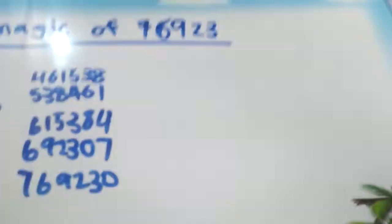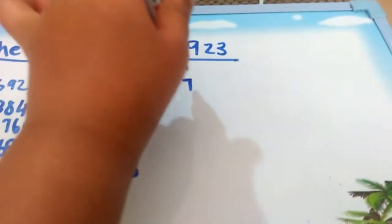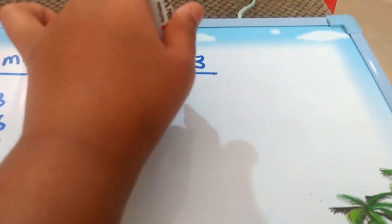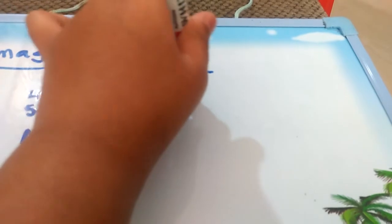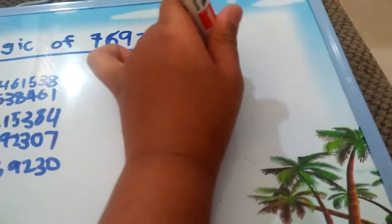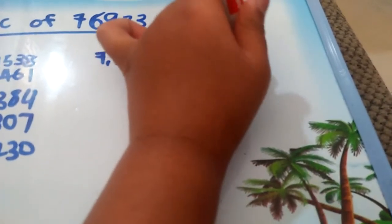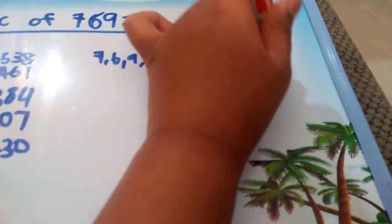So we need to understand the digits. There are digits that use 7, 6, 9, 2, and 3, and digits that use 1, 5, 3, 8, 4, and 6.